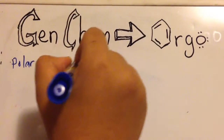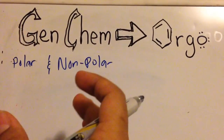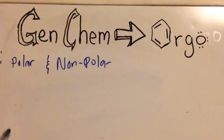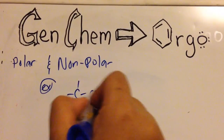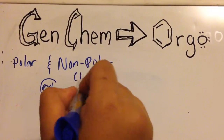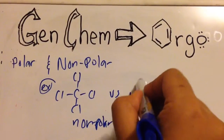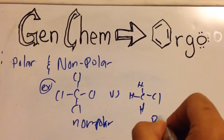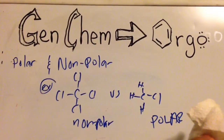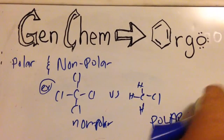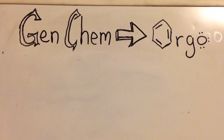First and foremost, you should know the difference between polar and non-polar molecules. Polarity is something your professors have probably talked a lot about, so I don't want to get too deep into it. But basically, if I give you CCl4, you should know why that's a non-polar molecule, versus CH3, which is actually a polar molecule. In orgo chem they don't talk about it much, but it should be second nature for you.